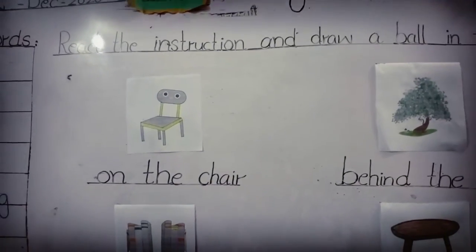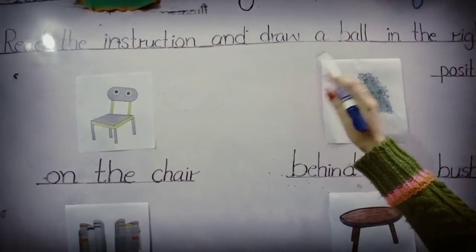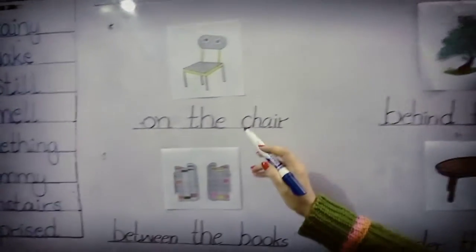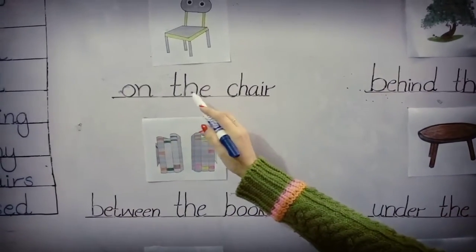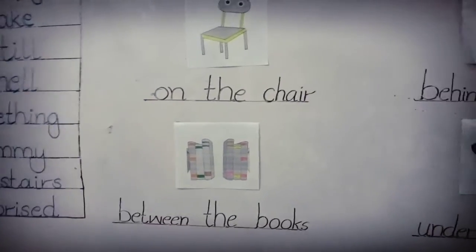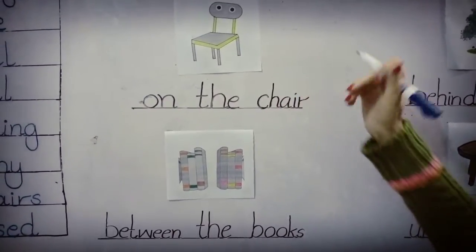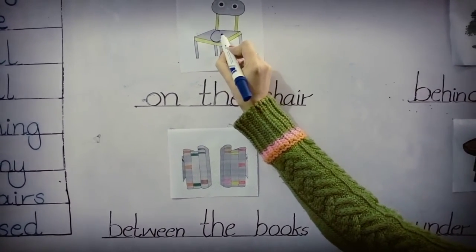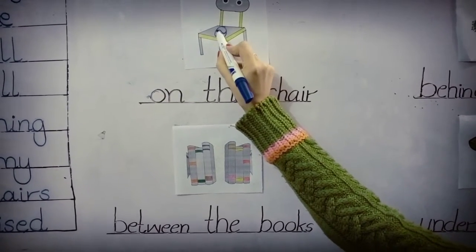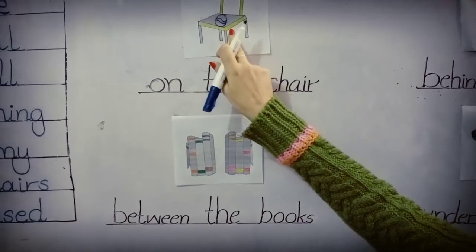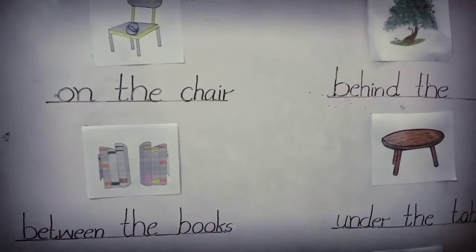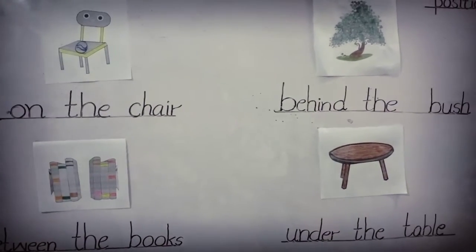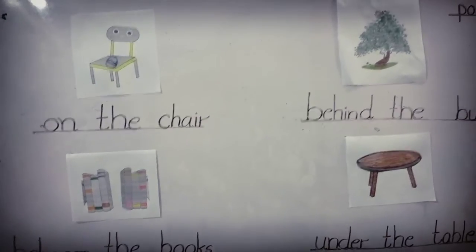Read the instruction and draw a ball in the right position. First: on the chair. On the chair means chair ke ooper. Everything we keep on a chair, on a table, or any top area.